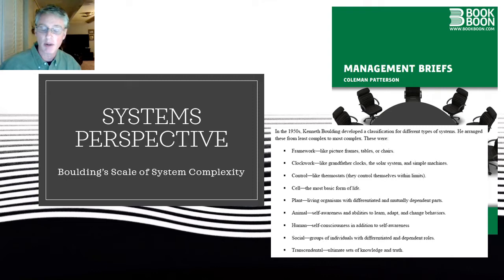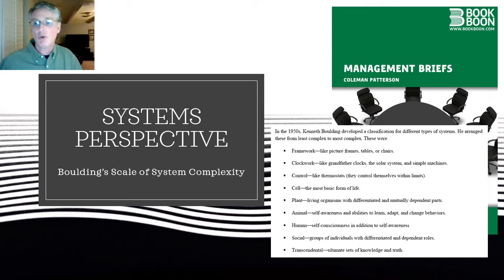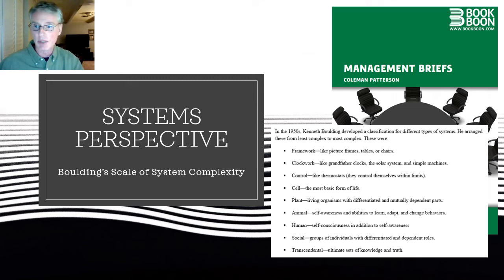Remember, after the Hawthorne studies, all of a sudden we realized that the old way of thinking about organizations — just simply as machines — they were more complex than that. This people element became an issue. Researchers back in that day needed to find out about organizations as more than just economic systems, and basically org theory: departmentalization, division of labor, span of control — those classic org design issues that we will come to at the end of this book.